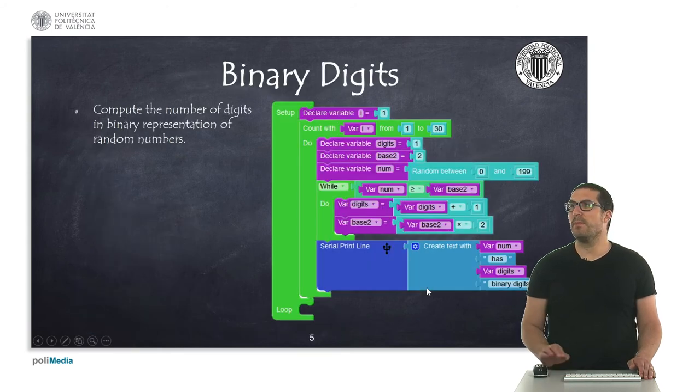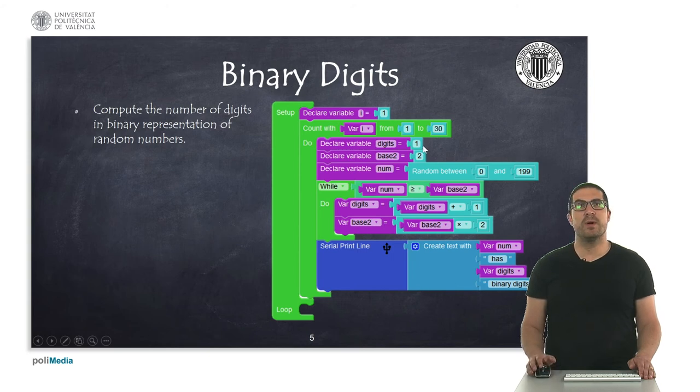This is the first example in which what we try to do is compute the number of binary digits. For that, what we're doing is generating 30 random numbers between 0 and 199. And here, what we do is a while loop,